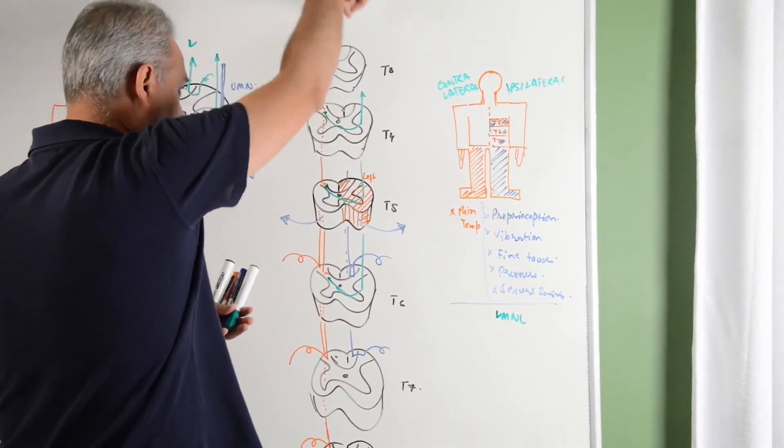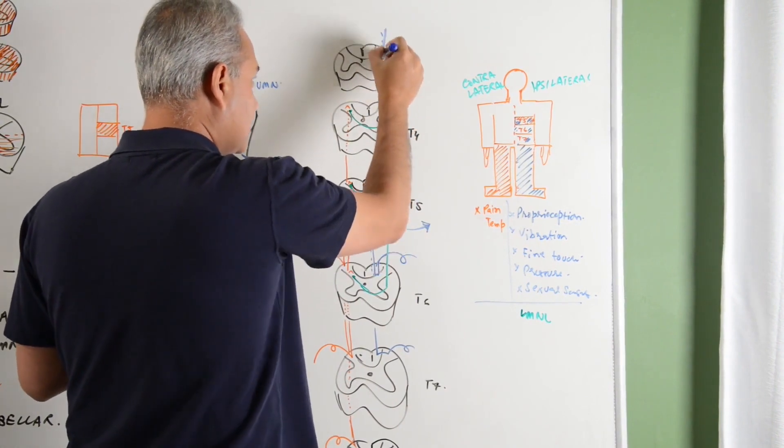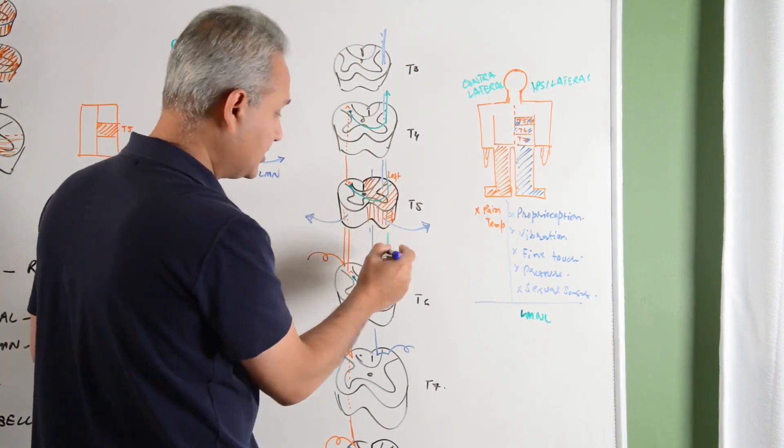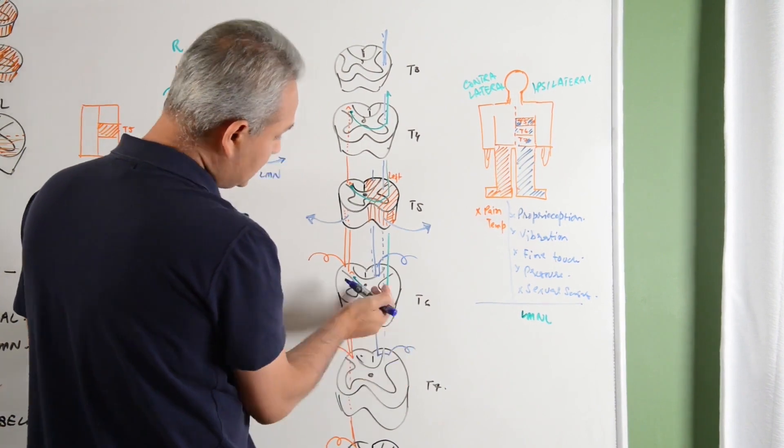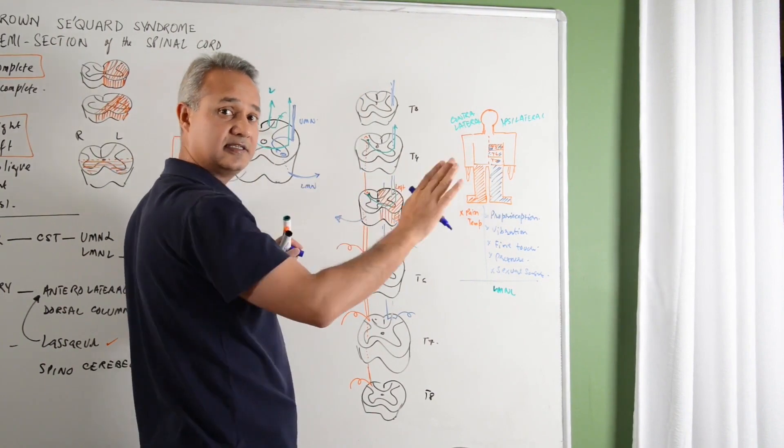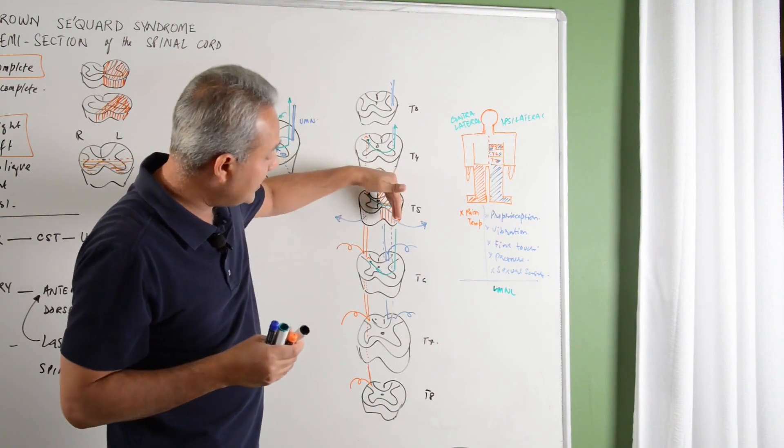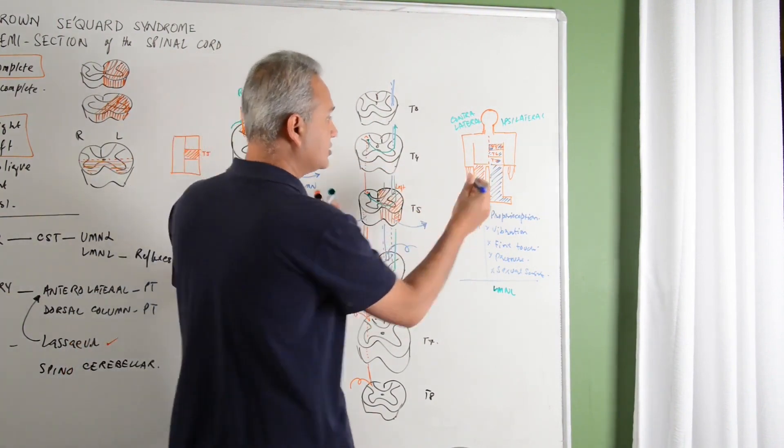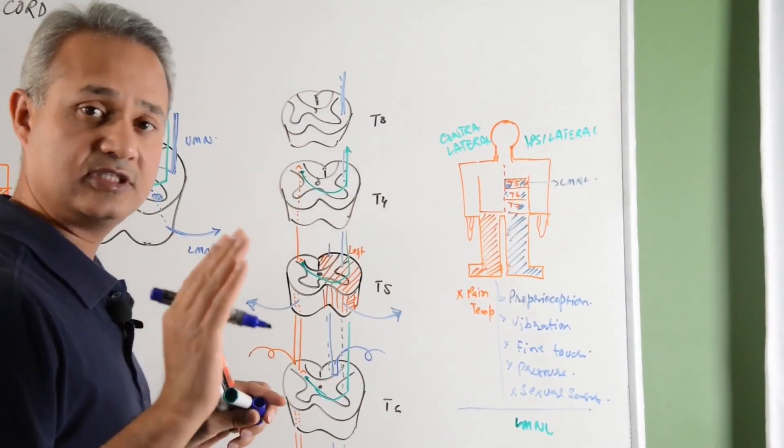Similarly, the upper motor neuron that was coming down, the corticospinal tract that was coming down, that tract got damaged here. Below that it is going, but remember this tract while it is going down, the connection from higher center is gone. At the same side, at the section, lower motor neuron lesion would appear. This would be lower motor neuron lesion at the section on the same side ipsilateral.